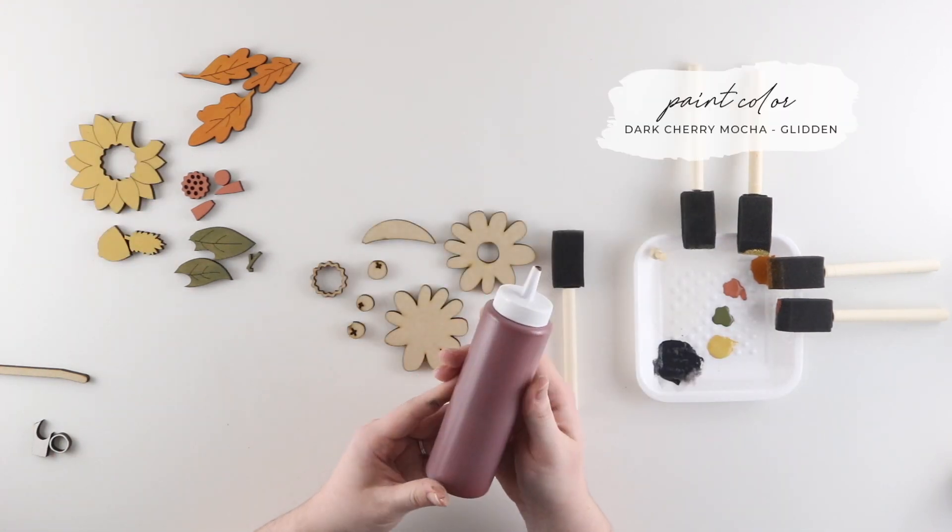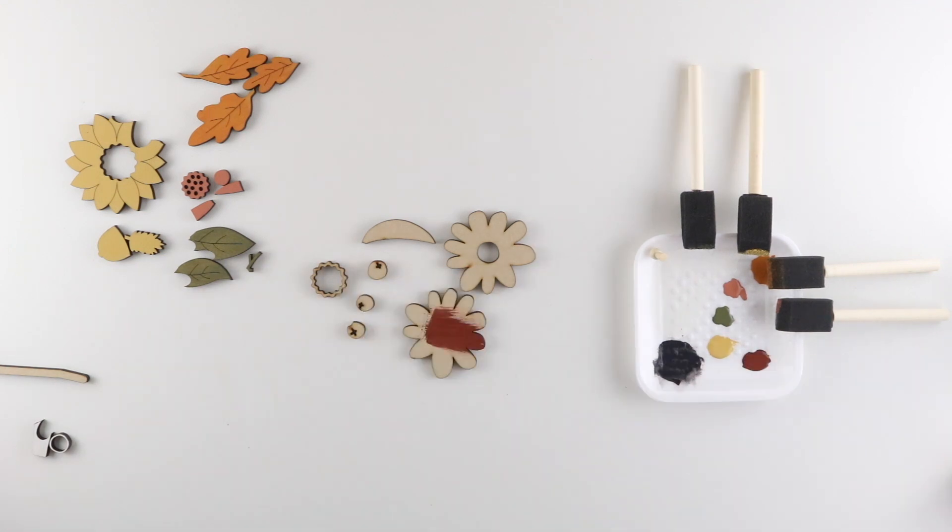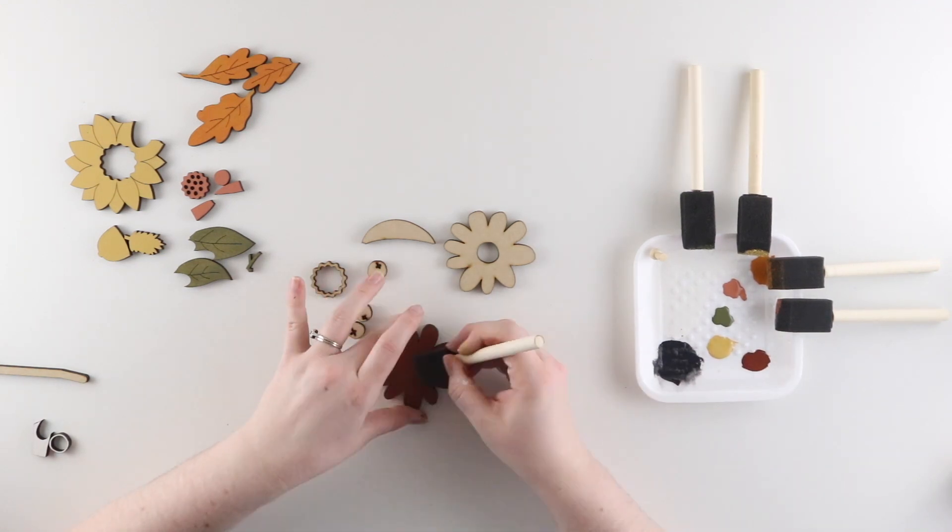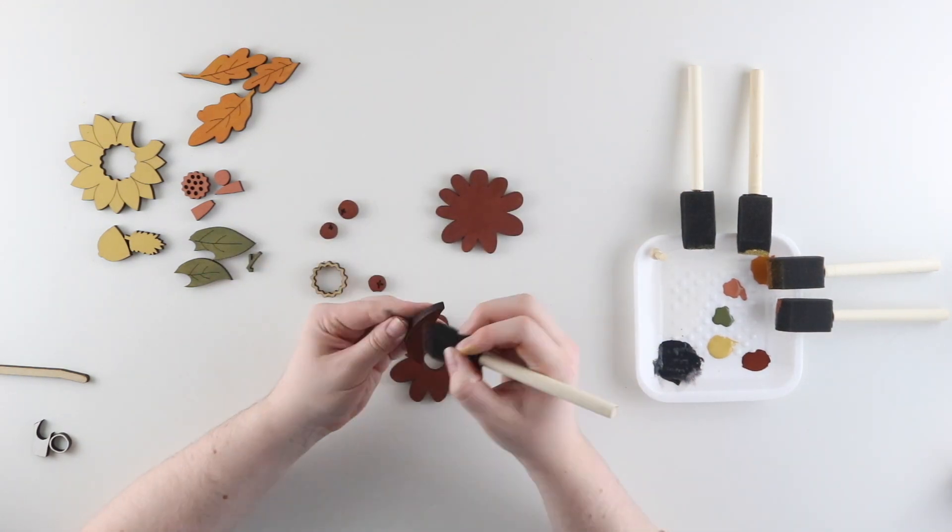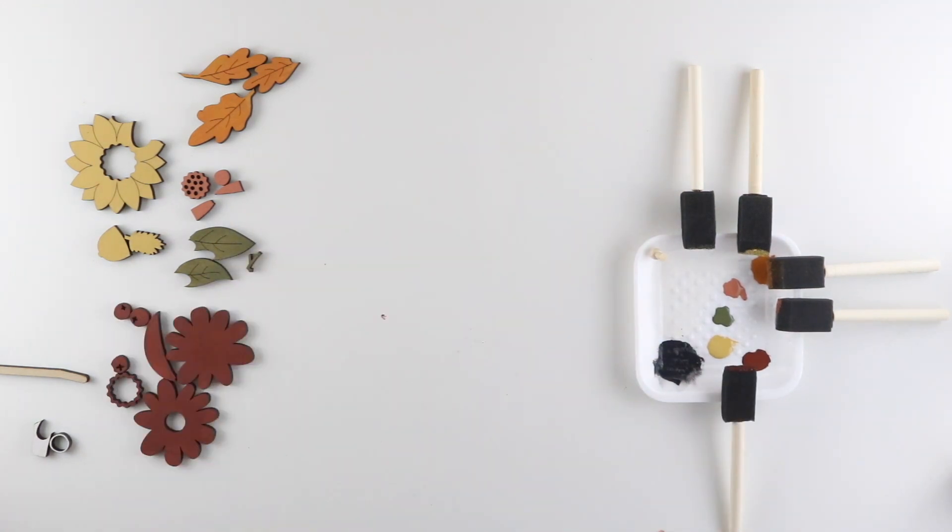And the final paint color I'm using is Dark Cherry Mocha by Glidden. You technically don't need to paint this larger solid flower piece because it's going to be layered underneath the other one, but I did just in case. And now time to do a quick second coat on everything.